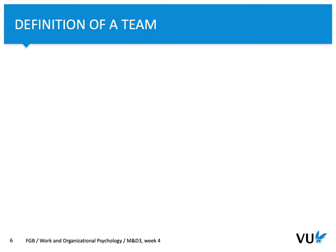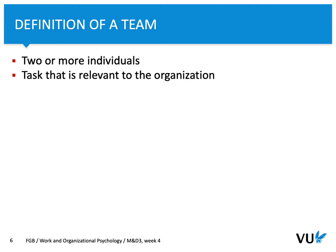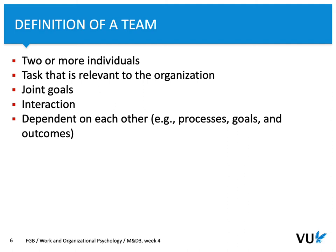Before we discuss teams, it's important to understand what a team actually is. A team involves at least two individuals. A team can only be considered a team if they perform a task relevant to their organization, have common goals, interact with each other, and to some extent depend on each other. This is related to specific group processes — how goals are attained and team outcomes.